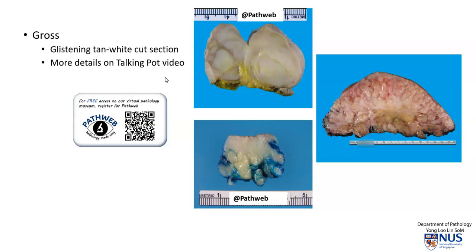Grossly, these tumors tend to have a glistening, whitish or sometimes whitish-yellow cut section. Here is an example of a plexiform neurofibroma with multiple nodules. The gross features are covered in more detail by a separate talking pot video.